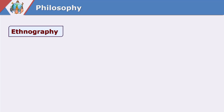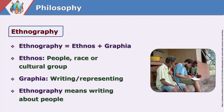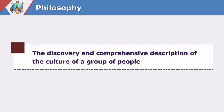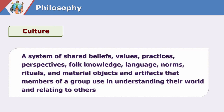The word 'ethnography' is made of two words: 'ethnos' and 'graphia'. Ethnos means a culture, people, or a race. Graphia means writing or representing. So, writing or representing about people, about a race, about a culture is ethnography. Ethnography is the discovery and comprehensive description of the culture of a group of people. A culture is a system of shared beliefs, values, practices, perspectives, folk knowledge, language, norms, rituals, and material objects and artifacts that members of a group use in understanding their world and relating to others.